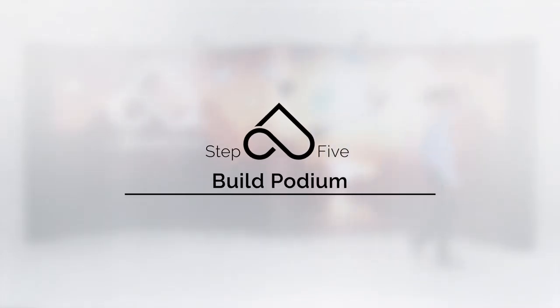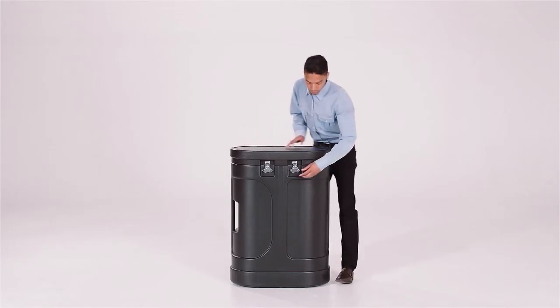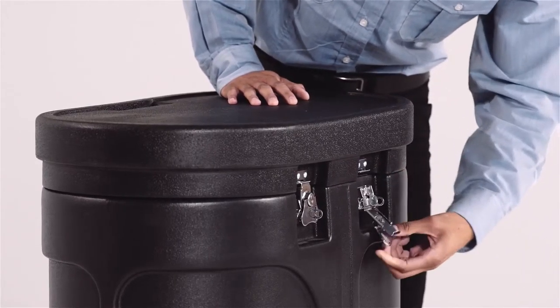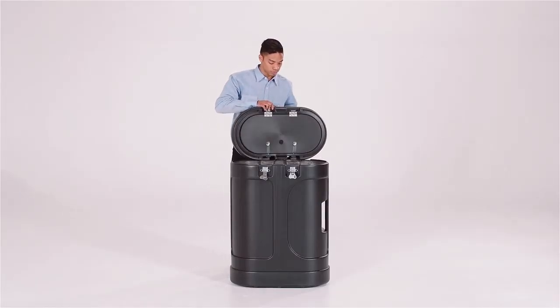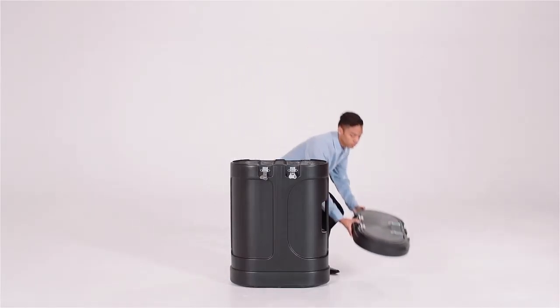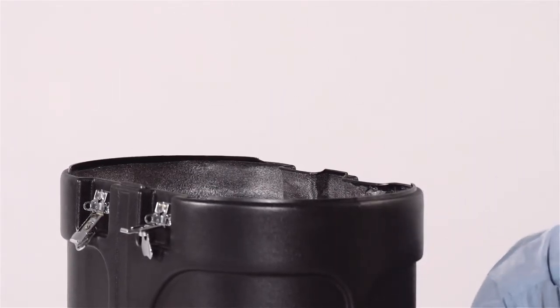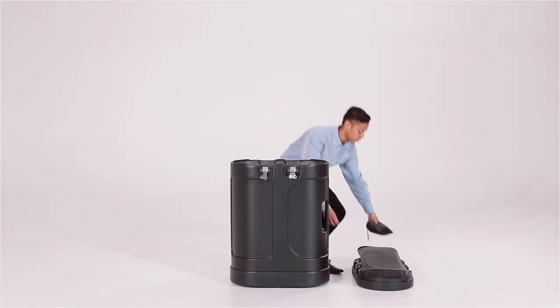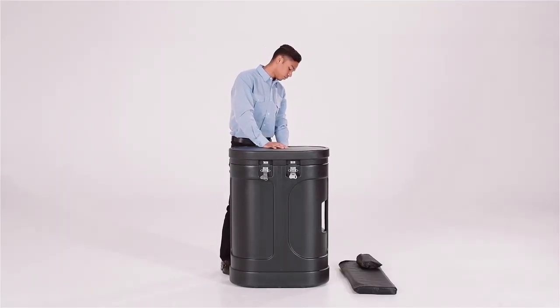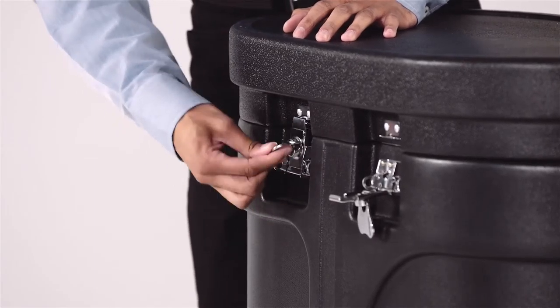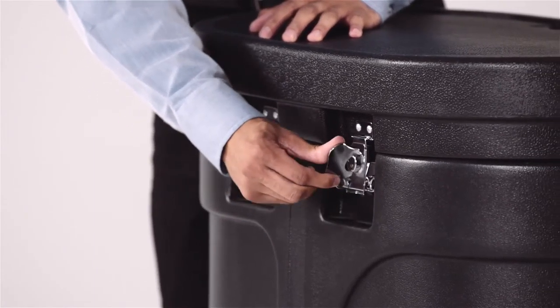Let's take a look at how the wheeled hard case converts into a podium. Undo the butterfly latches and remove the lid. Take the case conversion kit out, which includes the fabric skirt and countertop. Put the case lid back on and lock. Even though shown differently here, we recommend once the skirt and podium top have been removed, place their empty bags back in the case for easy storage.